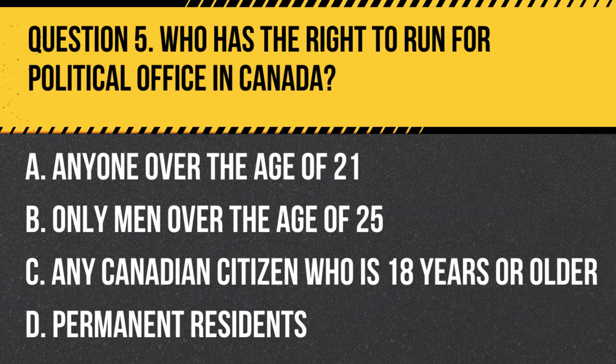Question 5. Who has the right to run for political office in Canada? A. Anyone over the age of 21. B. Only men over the age of 25. C. Any Canadian citizen who is 18 years or older. D. Permanent residents.